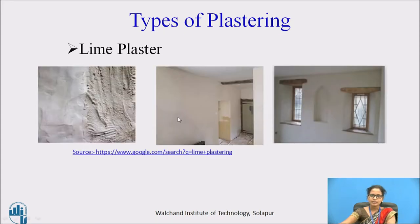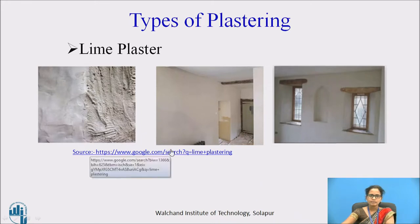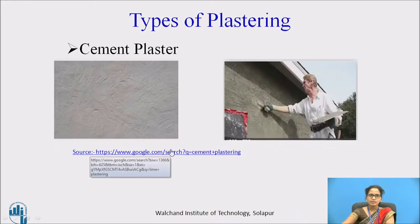Lime plaster is called so because lime is used as a binding material in this type. Lime plaster is somewhat similar to lime mortar. The only difference will be in the use rather than the composition. Lime plaster is actually composed of ordinary lime, sand, and water.